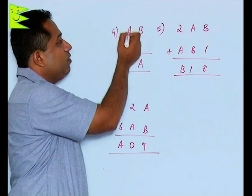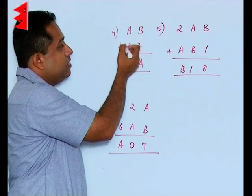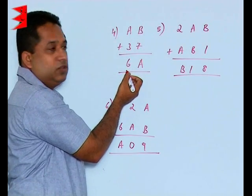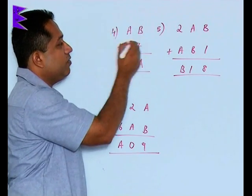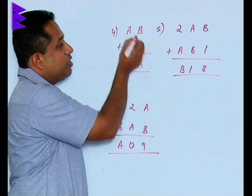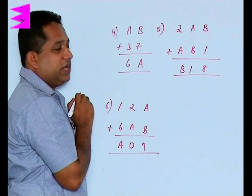If 1 gets carried over, if we are assuming 3, then 3 plus 3 is 6. 6 plus 1 will give us 7. So we should not have anything carried over from the units place to the tens place. So we cannot take the value of A as 3.